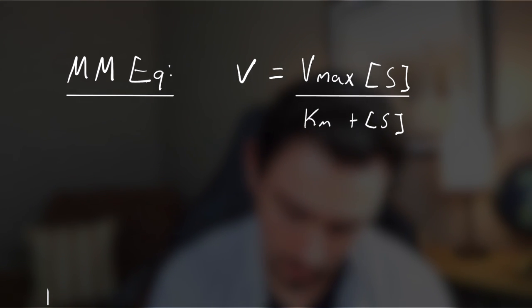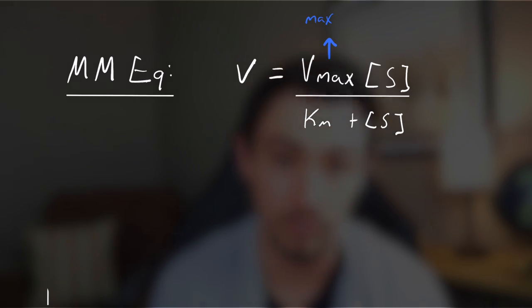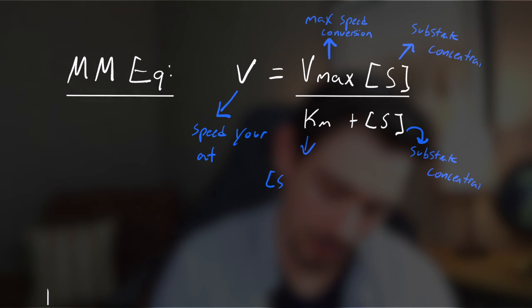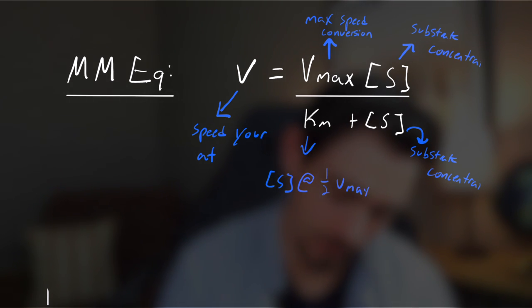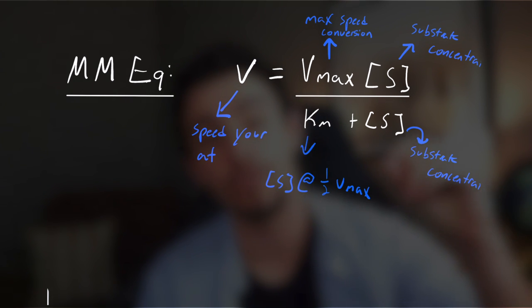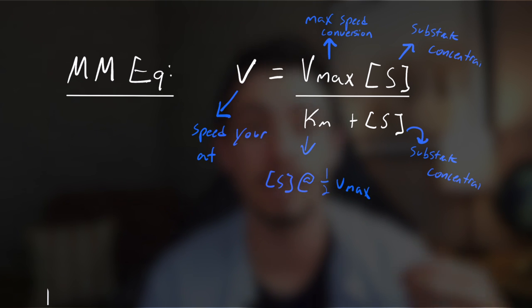Vmax is the maximum speed of conversion — how quickly the enzyme could do its job if everything was perfect. V is the speed that you're at given the conditions, meaning how many moles per second are being converted. S is the concentration of substrate, and Km is the concentration of substrate at one-half Vmax — how much substrate it takes for your enzyme to function at 50% of its capability.